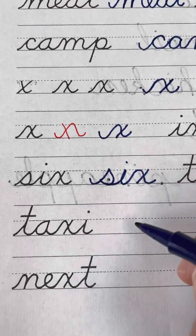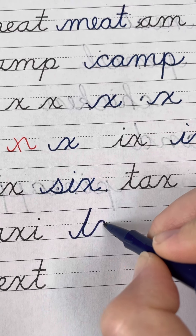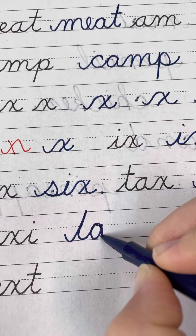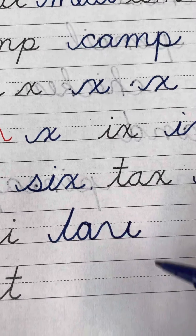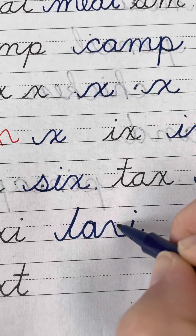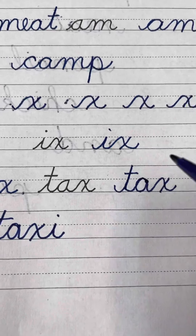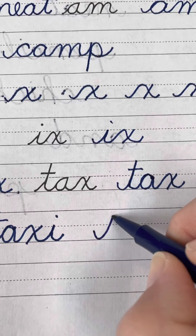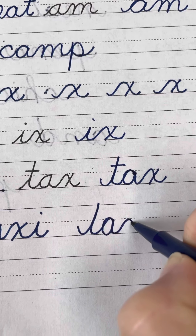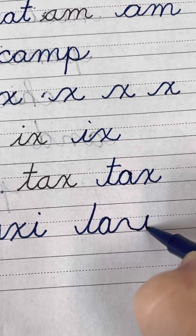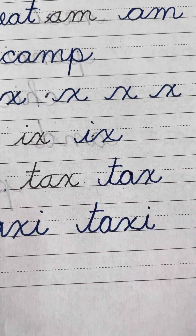How about taxi? T, A, X, I. I dot my I, cross my X, and I cross my T. Let me show you that one one more time. Taxi — T, A, now watch my swoop for the X. And then I. Dot the I, cross the X, cross the T. Taxi.